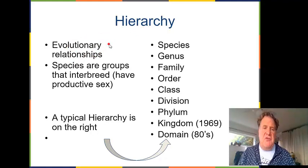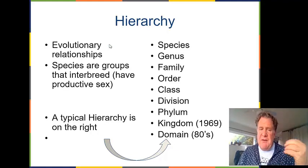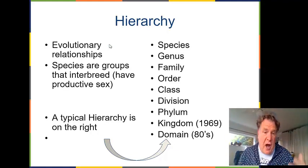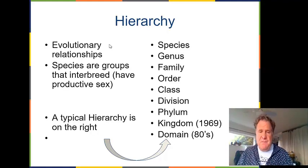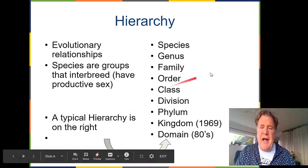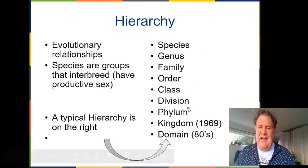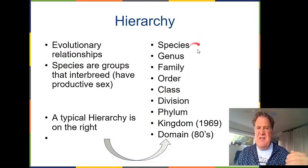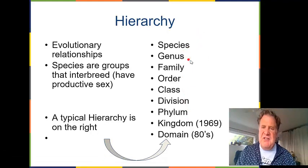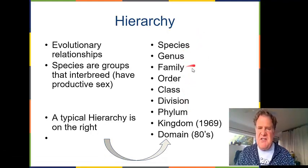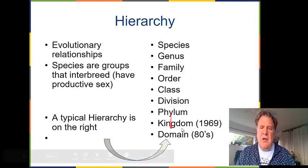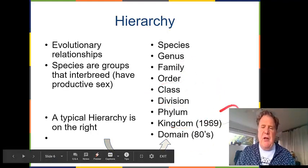All of life shares a common ancestor. When we talk about eukaryotes, a species is defined by organisms that can produce an offspring together — if they can have sex with one another and produce offspring, they're the same species. A typical hierarchy on the right shows domain, kingdom, phylum, division, class, order, family, genus, species. A number of species together make up a genus, a number of genera make up a family, and a number of families make up an order. The kingdom system was developed in 1969, and the domain system came once we started getting genetic sequencing information.